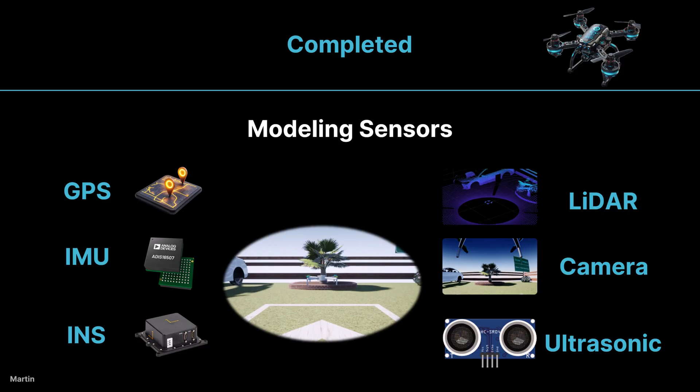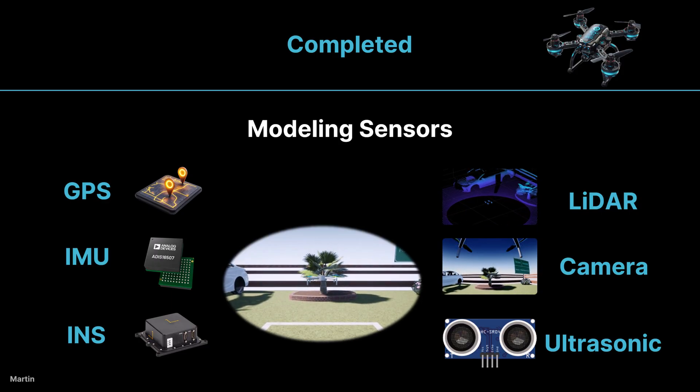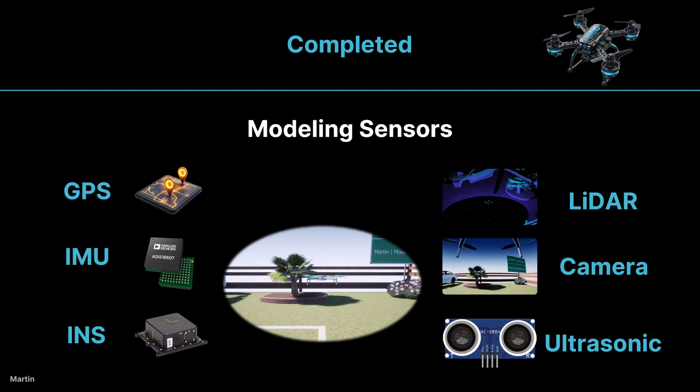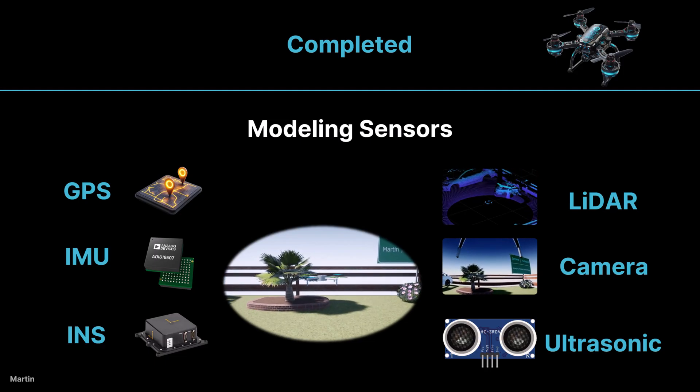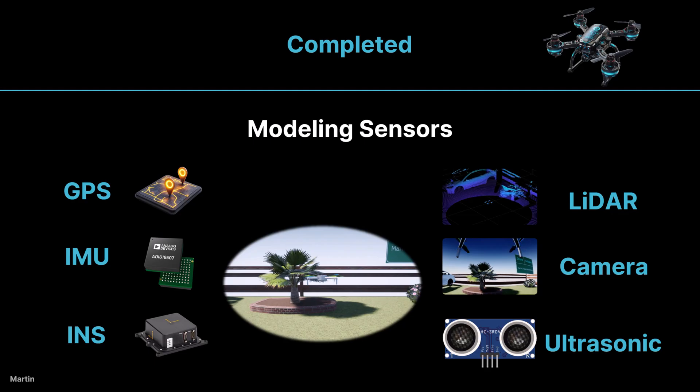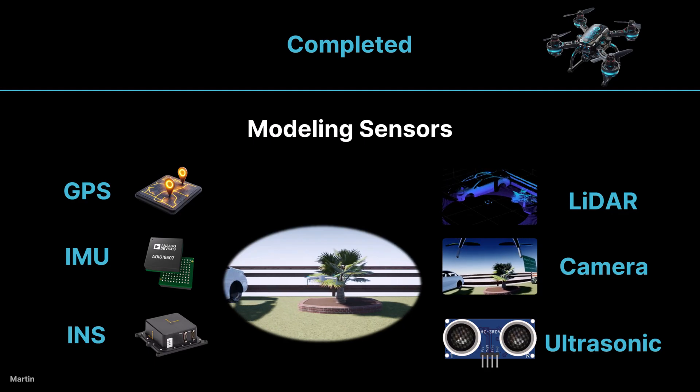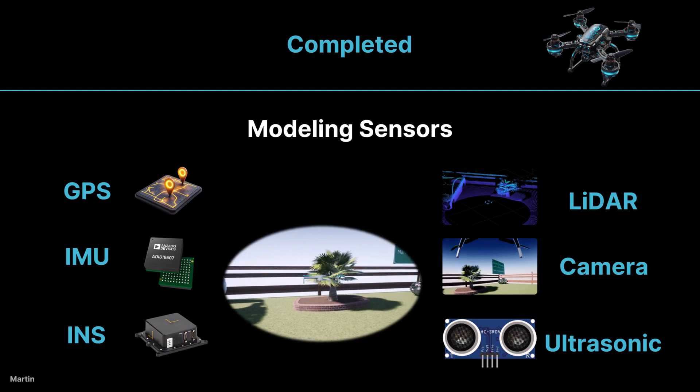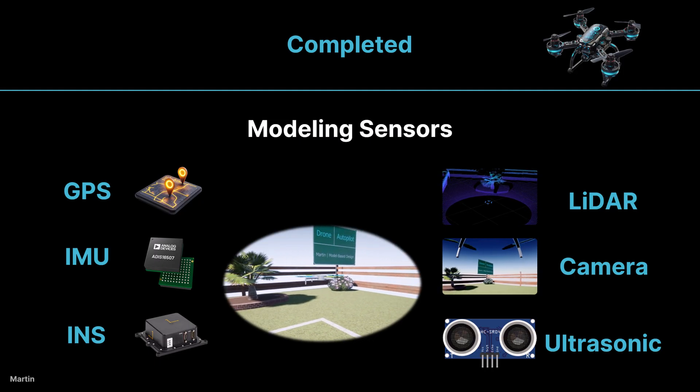Let's wrap up this session. We've explored how to model various virtual sensors in Simulink, including GPS, IMU, INS, LiDAR, fisheye camera, ideal camera, depth camera, and ultrasonic sensor. I hope this session has given you a clear understanding of how these sensor models enhance the realism and capability of a quadcopter simulation.